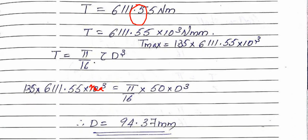To calculate the diameter of the shaft, we substitute the torque value: 1.35 × 6,101.55 × 10^3 = (π/16) × τ × D^3, where τ = 50 N/mm². Solving for D, we get D = 94.37 millimeters.